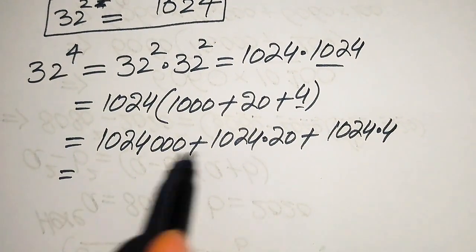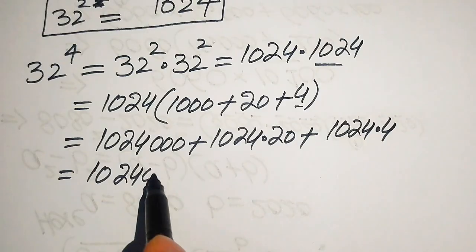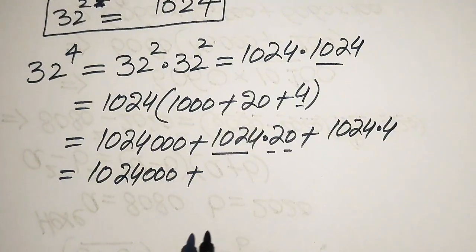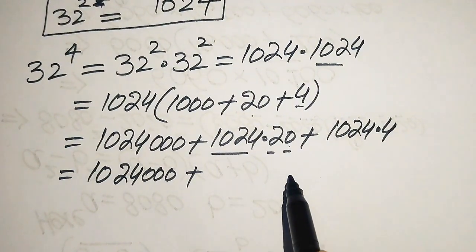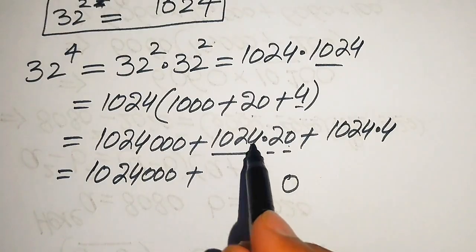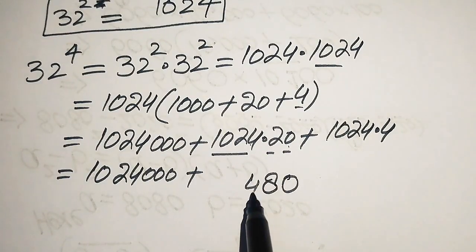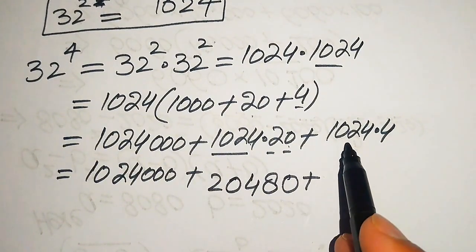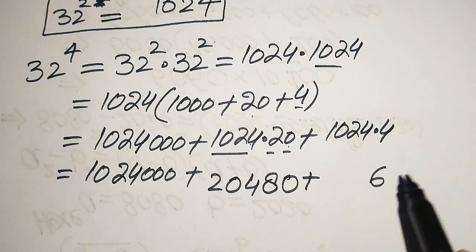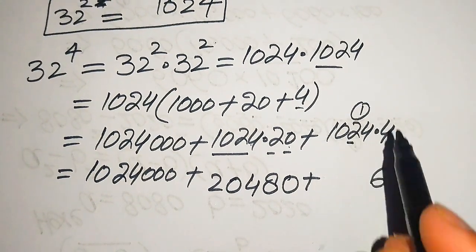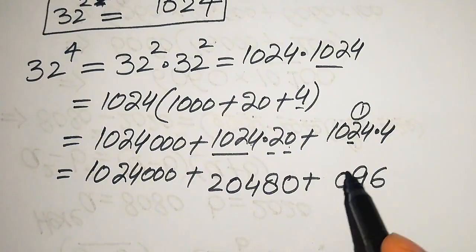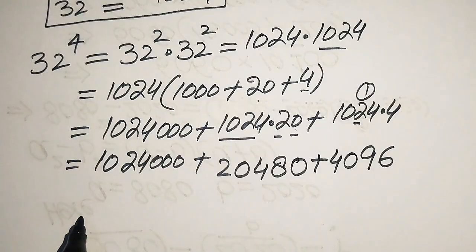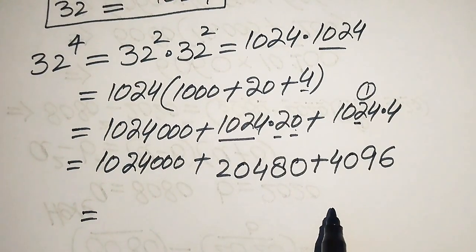Now we multiply these bigger numbers without using a calculator. We consider this as a one-digit number and this as a two-digit number. When we multiply 0 with this number we get 0; 2 times this number gives 2 fours are 8, 2 twos are 4, 2 zeros are 0, 2 ones are 2. Then 4 times this number: 4 fours are 16, write 6 carry 1; 4 twos are 8, 8 plus 1 is 9; 4 zeros are 0; 4 ones are 4. So we get 4096.